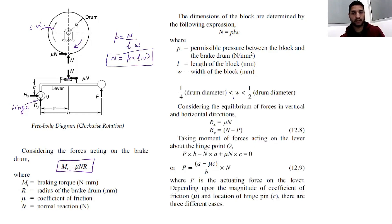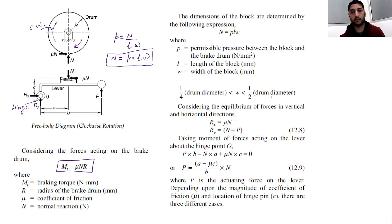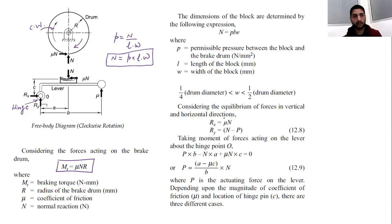The width of the block is generally between one-fourth of the drum diameter and half of the drum diameter — that is, w is greater than D/4 and less than D/2 — in order to maintain uniform pressure between the drum and the block brake.